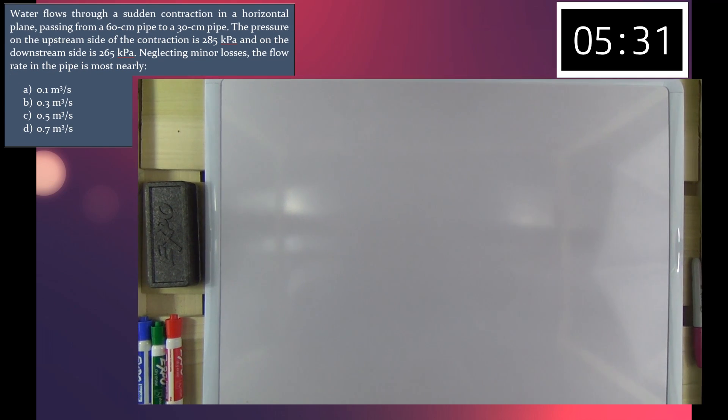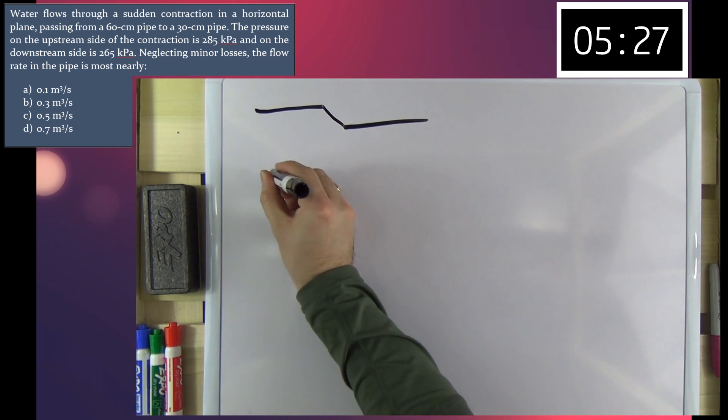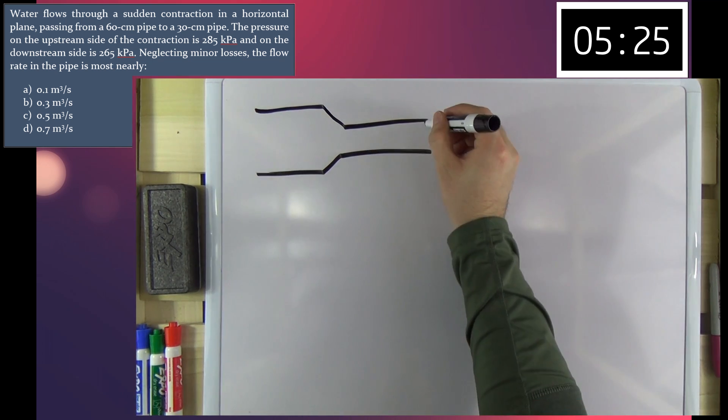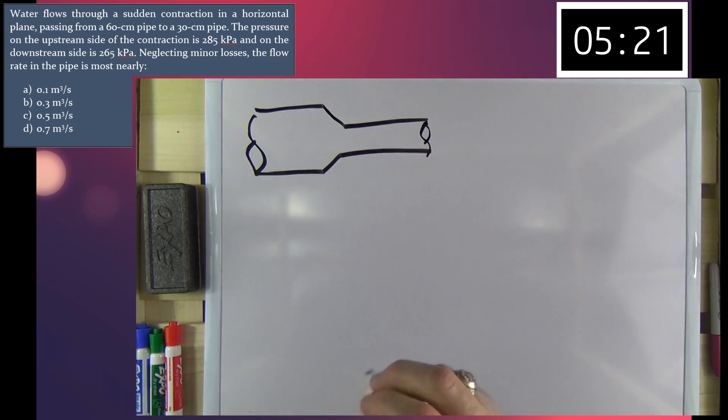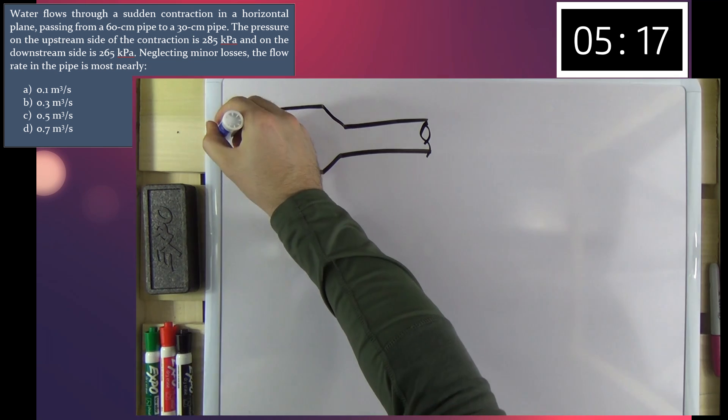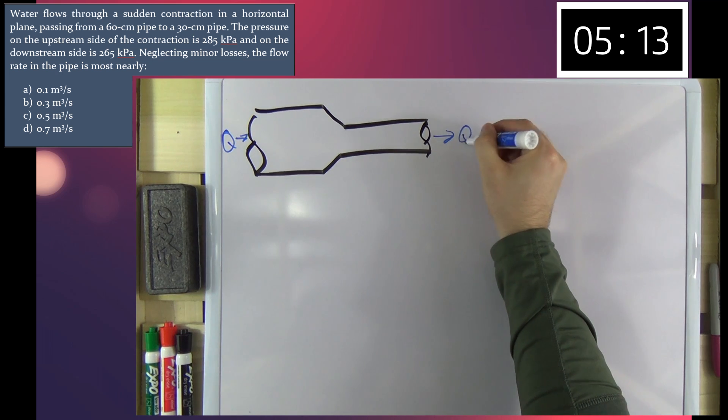Alright, first thing I always like to do is draw a little picture so we can wrap our mind around what's going on here. We've got a pipe that goes through a contraction like so. And this being water after all, we'll label everything using blue. Flow rate going in this direction coming out over here.